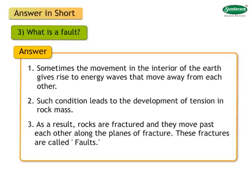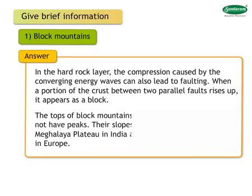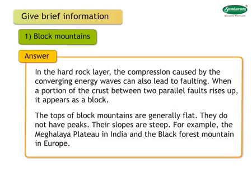Block mountains: In the hard rock layer, the compression caused by converging energy waves can also lead to faulting. When a portion of the crust between two parallel faults rises up, it appears as a block. The tops of block mountains are generally flat. They do not have peaks and their slopes are steep. For example, the Meghalaya plateau in India and the Black Forest mountain in Europe.